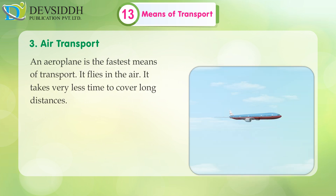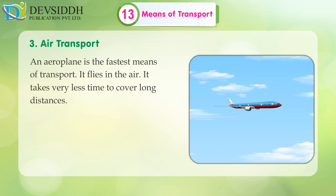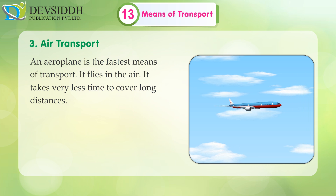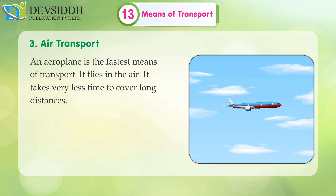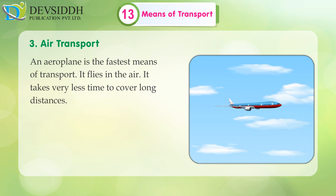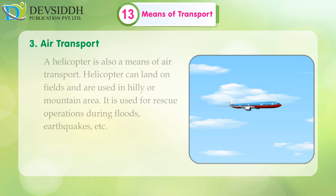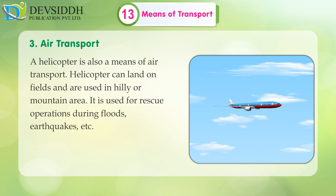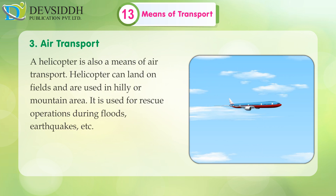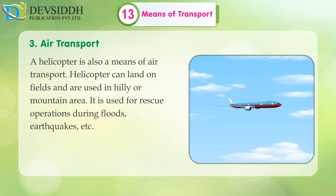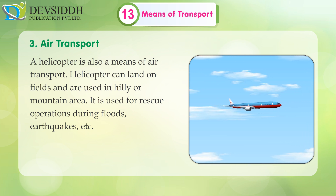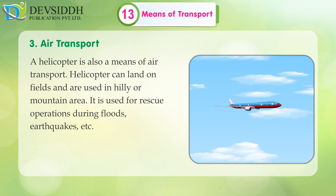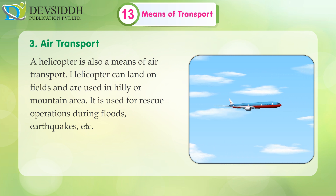Air transport: An aeroplane is the fastest means of transport. It flies in the air and takes very less time to cover long distances. A helicopter is also a means of air transport. Helicopters can land on fields and are used in hilly or mountain areas.